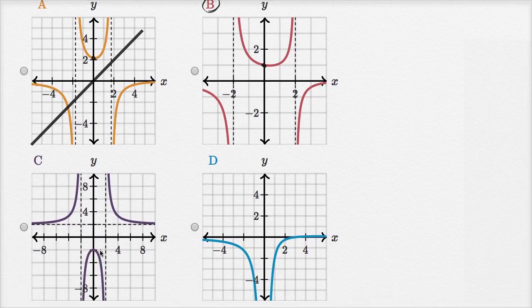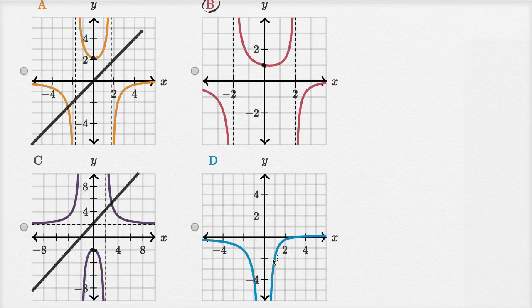Choice C has its y-intercept at y is equal to negative one. So once again, we can rule that out. And choice D has no y-intercept at all.